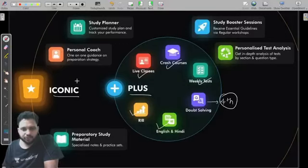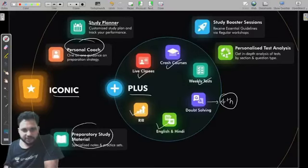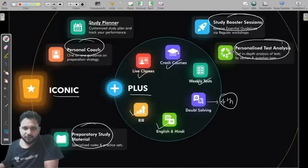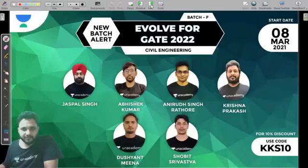You can also plan for Iconic. In the case of Iconic, whatever features I have explained for Plus are already included. In addition to Plus features, you will get a study planner, personal coach, personal mentor. Study material will also be provided in the case of Iconic. Study booster sessions and personalized test analysis will be there. These are the features of Plus and Iconic subscription.